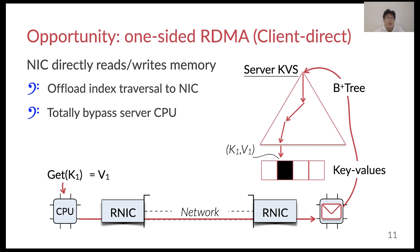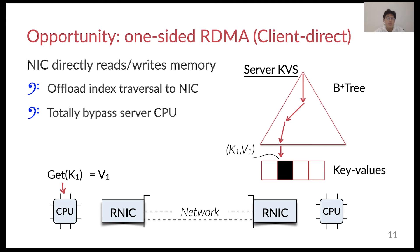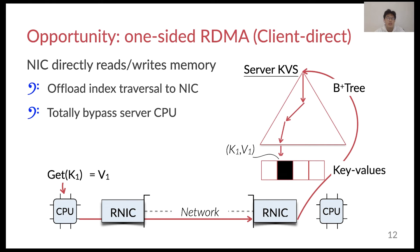To remedy this, there is a recently growing interest in leveraging the NIC to process the key-value request with one-sided RDMA. Specifically, NICs with one-sided RDMA support can directly access the server's memory by bypassing the server CPU. Consequently, we can shift the processing of the key-value request from the server CPU to the faster network. Since the workload is shifted from the server CPU to the client CPU, we call it a client-direct design.